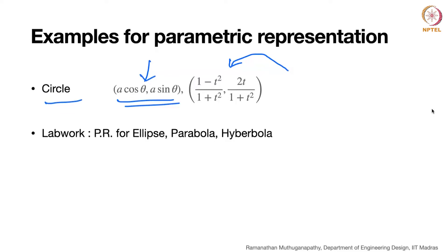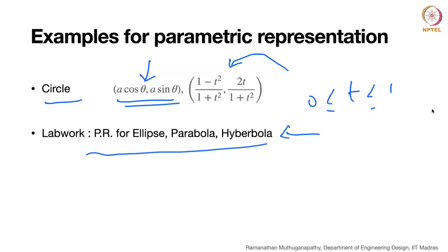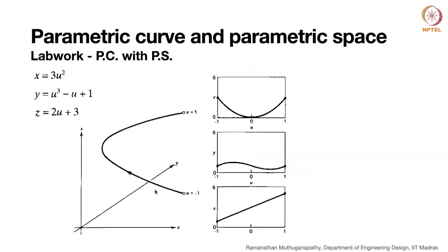Mathematically, you need to have the bounds correct - theta going from 0 to 2 pi, or t lying between 0 and 1. As homework, I suggest you look at what parametric representations are possible for other second-degree curves: circle, ellipse, parabola, hyperbola. This is the basic idea and a simple example of how we display a parametric curve. When you want to display it, you still have to pick up a coordinate system - typically Cartesian coordinates.